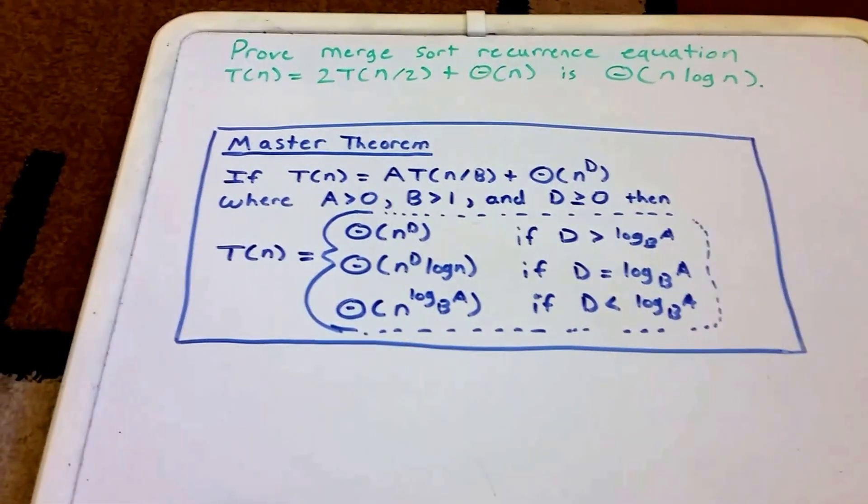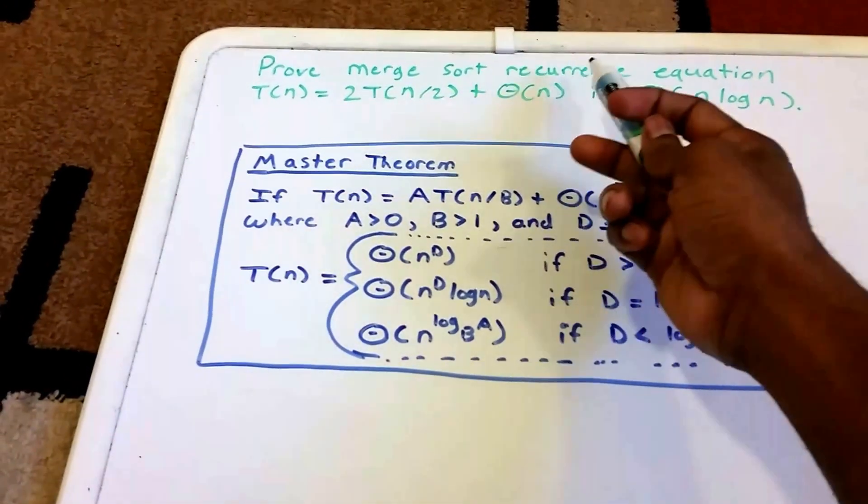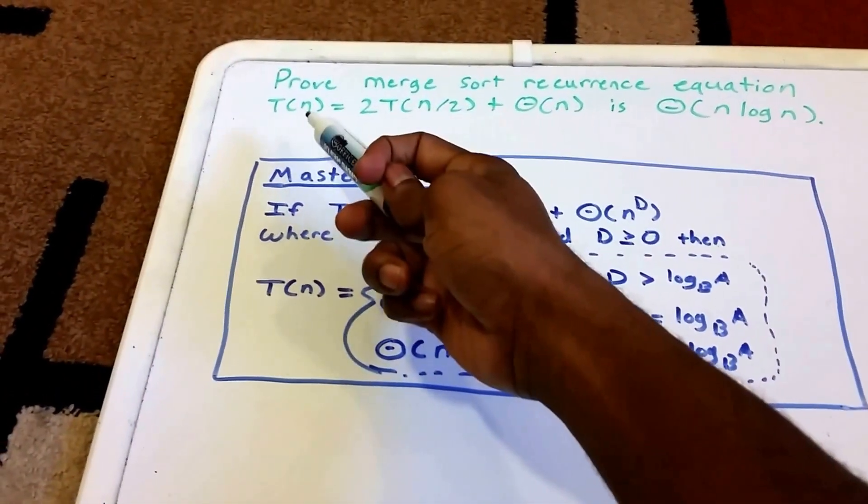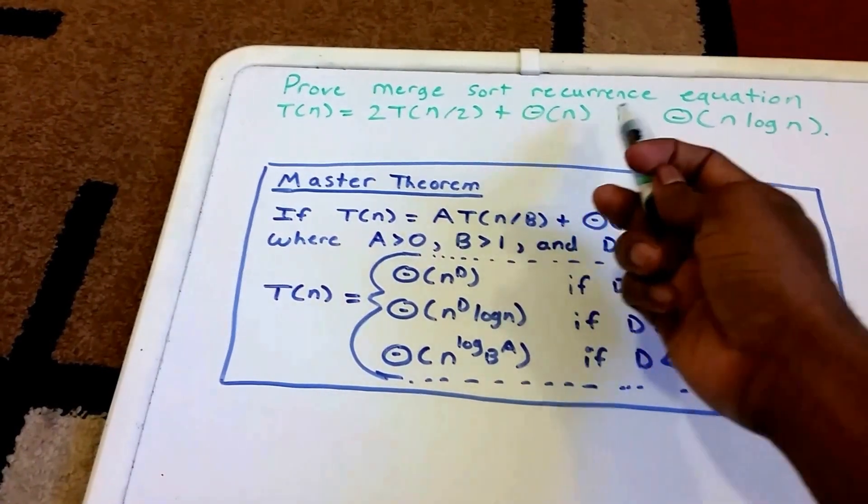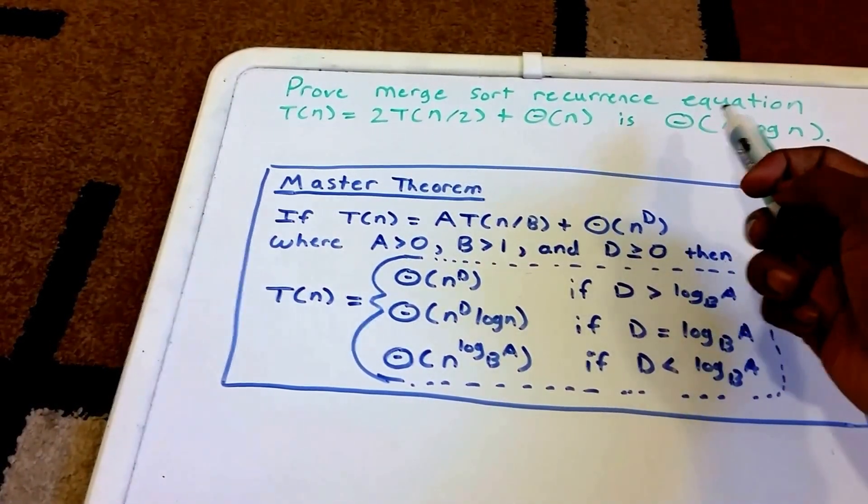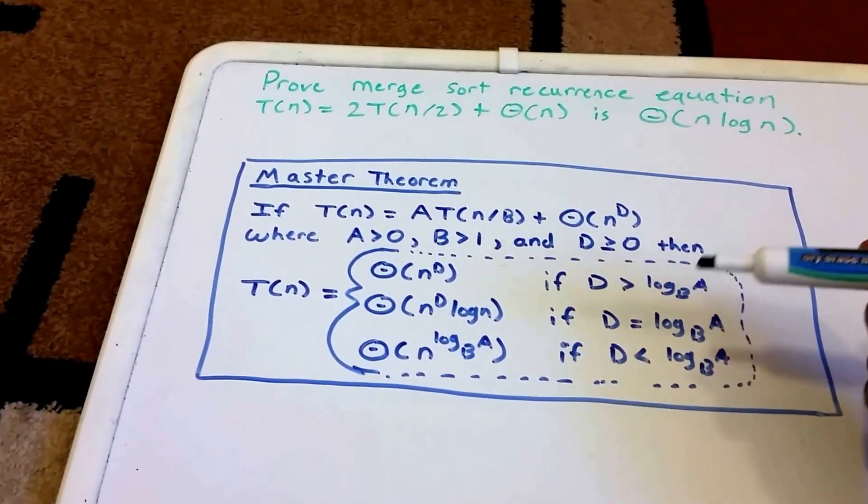Hey guys, welcome to this video. In this video we want to prove that the merge sort recurrence equation T(n) = 2T(n/2) + Θ(n) is Θ(n log n), and we can do that by using the Master Theorem.